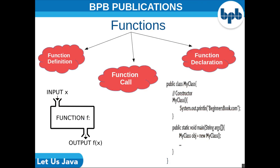A computer program cannot handle all tasks by itself; instead it requests other program-like entities called functions to get tasks done. A function is a self-contained block of statements that performs a coherent task of some kind. Every Java program has one or more functions in it. A function mainly consists of three parts: function defining, function calling, and function declaration. This book covers functions in two topics and gives enough time for each topic to be understood by everyone. You will get to know each function topic in detail and can practice with the exercises.